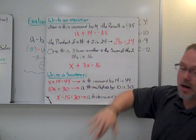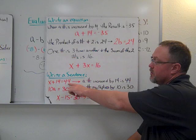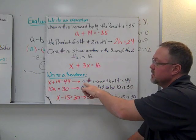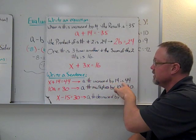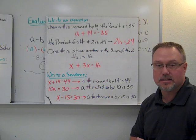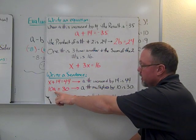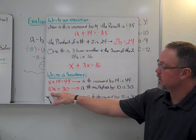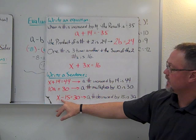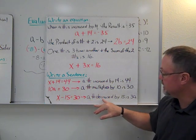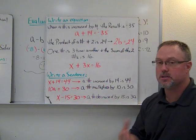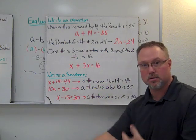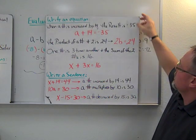Now going the other direction — given an equation, we write a statement for it. The equation becomes: 'a number increased by 14 is 44.' Keep statements as basic as you can. Another example: 'a number multiplied by 10 is 30.' And for x minus 15 equals 30: 'a number decreased by 15 is 30.' Use words like 'increased by' and 'decreased by' rather than general plus and minus.